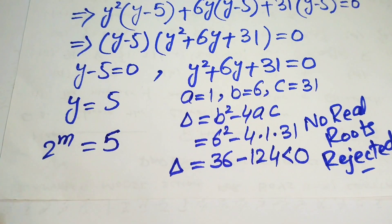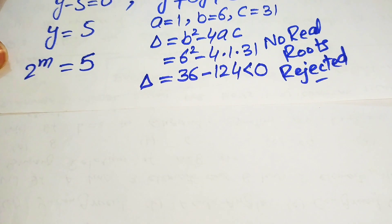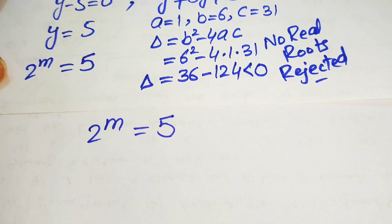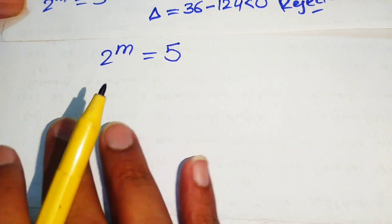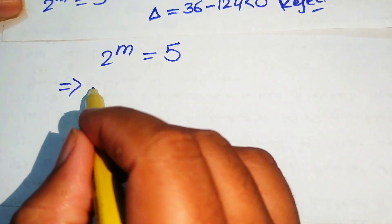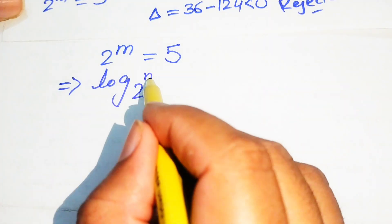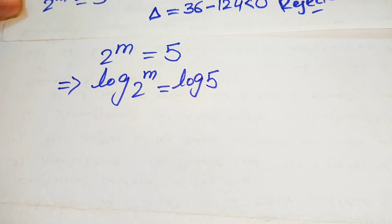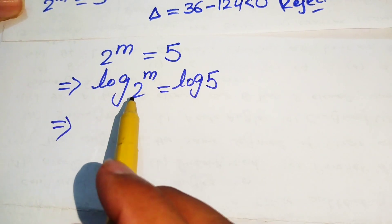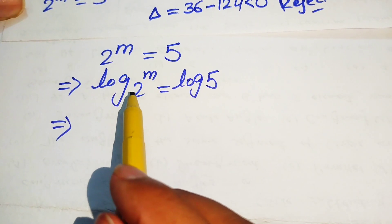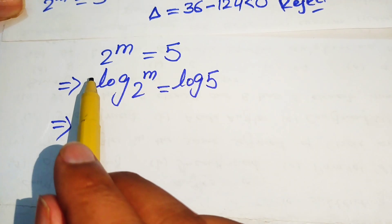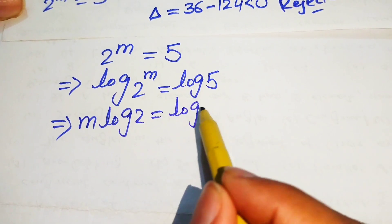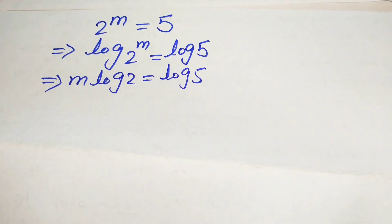Recalling that y equals 2 to the power of m, we back-substitute to get 2 to the power of m equals 5. To solve for m, we take the logarithm of both sides: log of 2 to the power of m equals log of 5. Using the logarithm power rule, this becomes m times log 2 equals log 5.